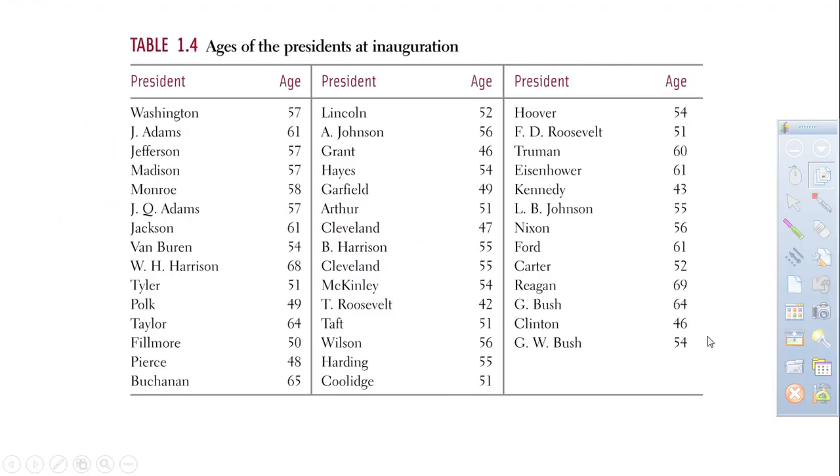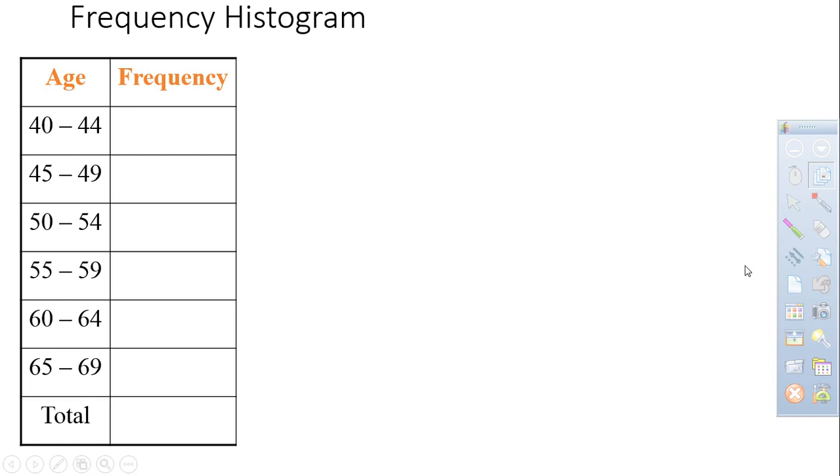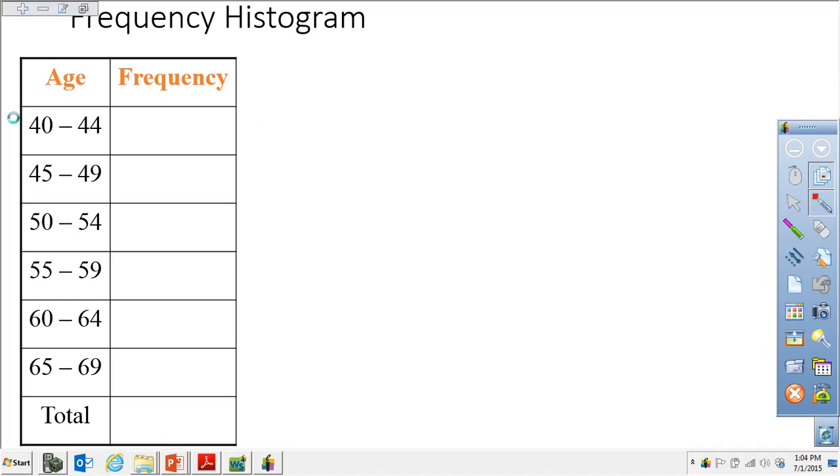First of all, here we go. With all the presidents through President Bush, does not include President Obama right now, but this is actually the age of the president at their inauguration. You can see they're all over the place. Right now the youngest here I believe was Kennedy at 43, but there was Teddy at 42, going up to Reagan at 69. But what I want to do is talk about this, a frequency histogram. So the first thing I'm going to do is I'm going to break off into groups.